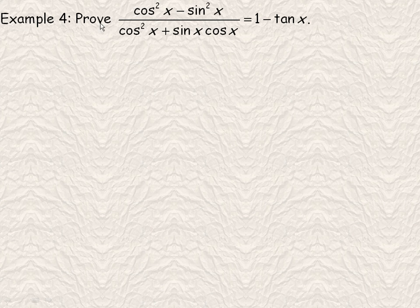One more example here. In example number 4, we are asked to prove that cos squared x minus sin squared x over cos squared x plus sin x cos x is equal to 1 minus tan x.